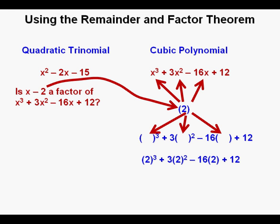Here's the expression with the 2 in place of the x. And that comes to 8 plus 12 minus 32 plus 12. And that equals 0.